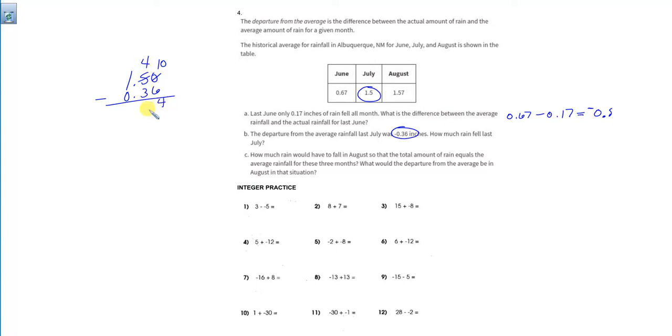Difference of 4. 4 minus 3 is 1. 1 minus nothing is 1. So it looks like last July they had 1.14 inches of rain, and that would be 0.36 hundredths of an inch below their typical average.